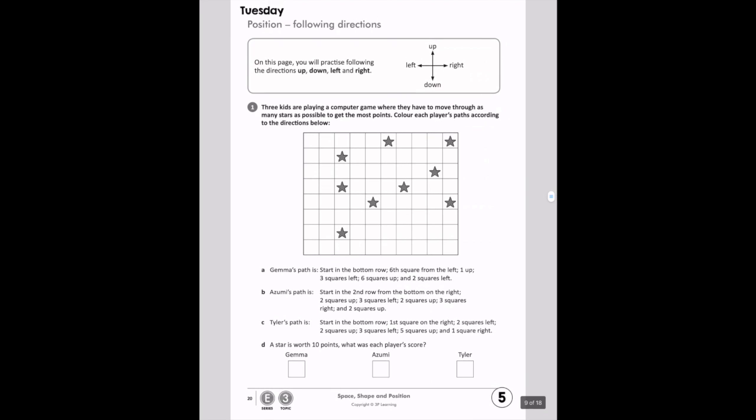On the last page for today, you're going to practice following the directions up, down, left, and right. These kids are playing a computer game where they have to move through as many stars as possible to get the most points. Remember you're trying to pass through the stars. Color each player's path according to the directions below. Follow their directions and color in their paths. For example, let's start with A. Gemma's path is start on the bottom row. The bottom row, remember these are rows, and when you go down, these are columns, right?